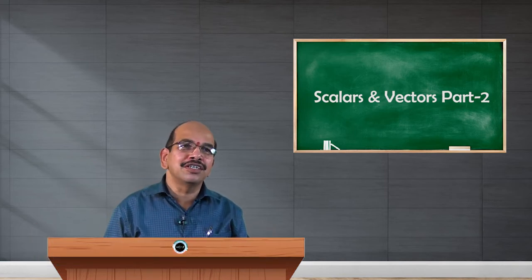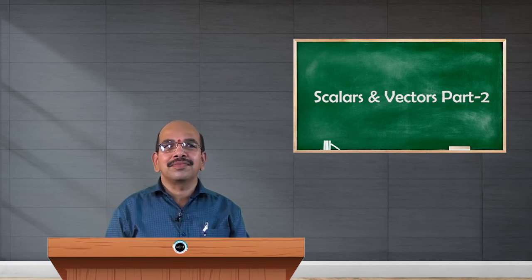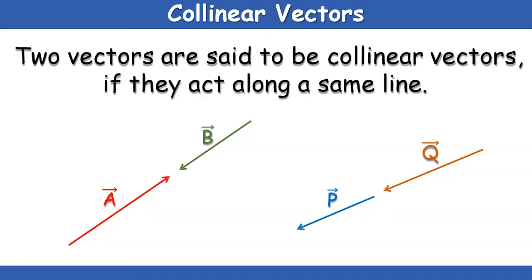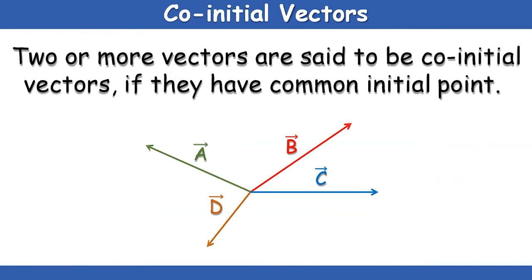Now we shall continue the discussion with collinear vectors. As shown in the figure, two vectors are said to be collinear if they act along the same line. For example, vector A is in a given direction and B is in the opposite direction, so they act towards a fixed point. Vector P in one direction and vector Q in the downward direction — direction may be different, but they should act along the same line. Such vectors are known as collinear vectors.